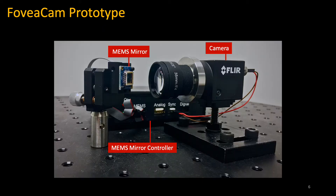Here is the FoveaCam prototype. We use a 3.6mm Mirrorcle MEMS mirror and a 220 Hz FLIR machine vision camera equipped with a 35mm lens. We use a Mirrorcle MEMS mirror controller to update the position of the MEMS mirror and to keep the MEMS mirror and camera in sync.